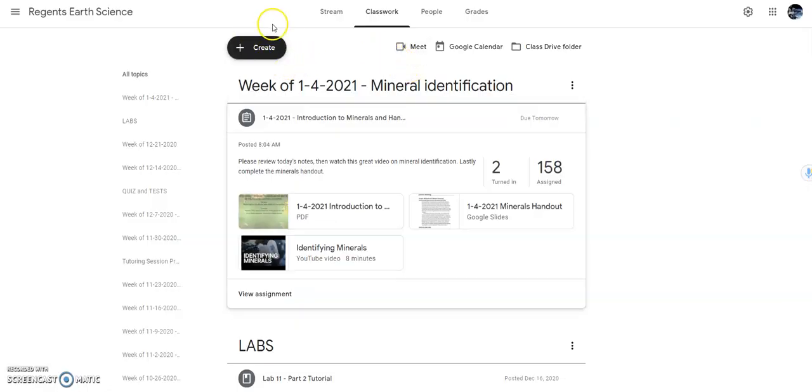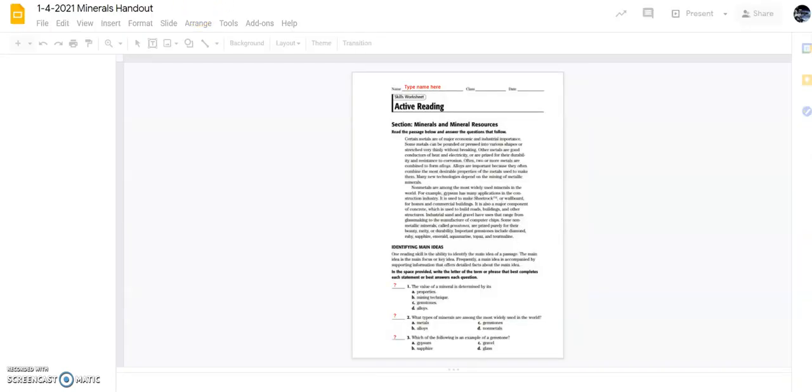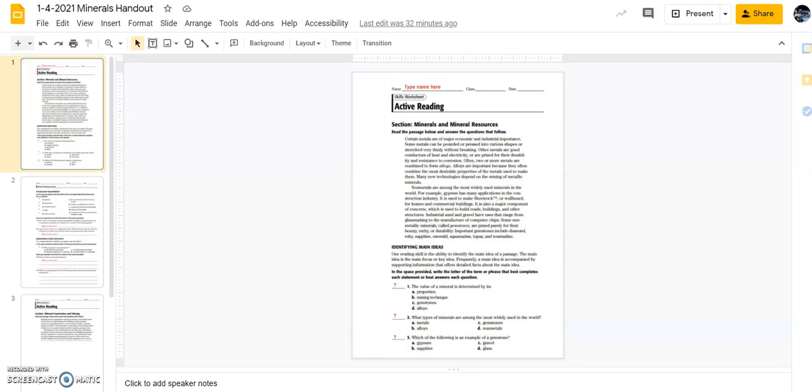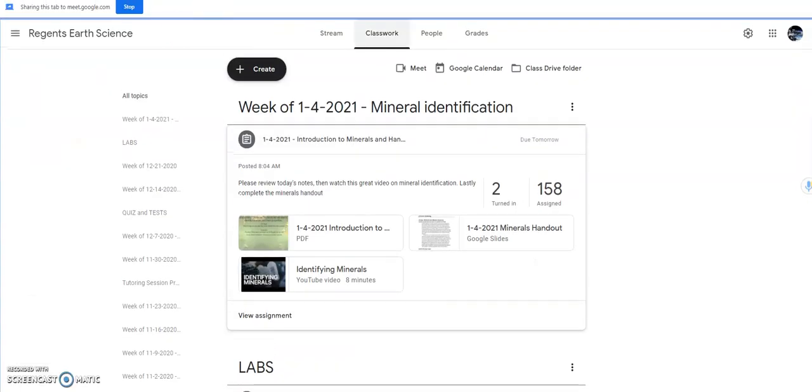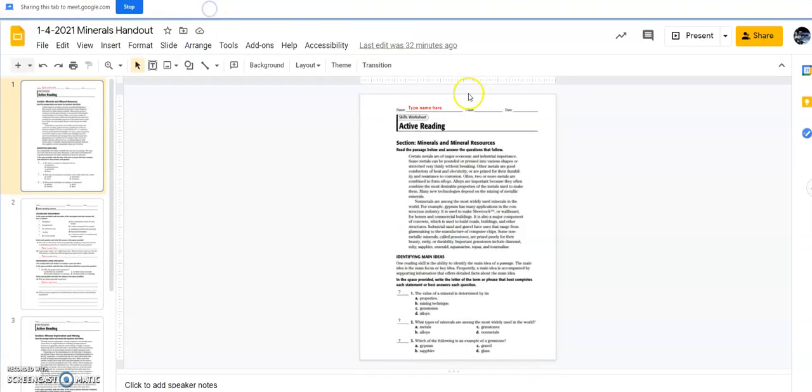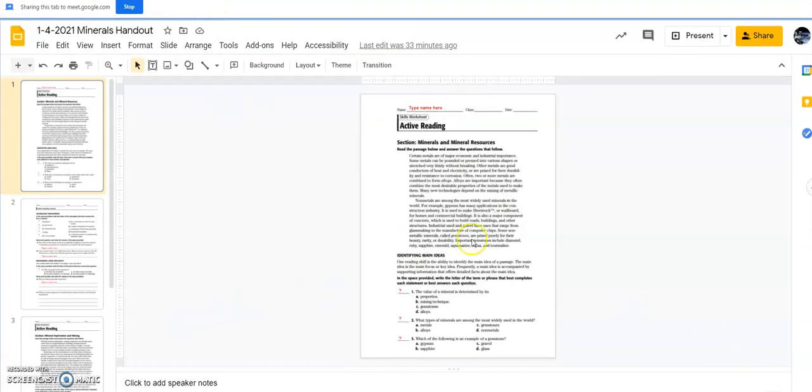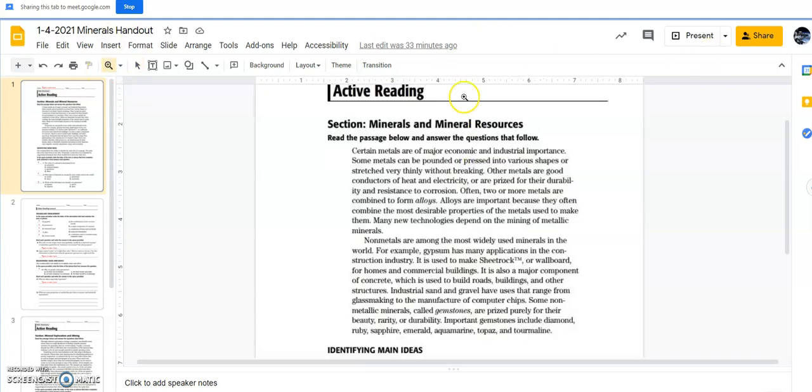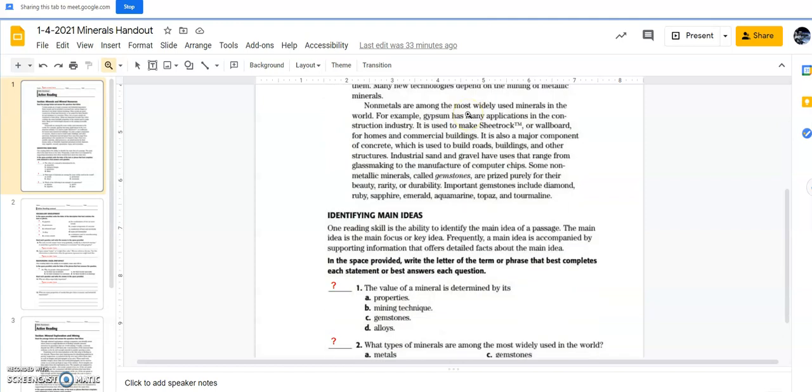You'll head to our Google classroom. You'll click on classwork. And you'll notice there's a new topic, week of 1-4-2021, mineral identification. You have a copy of today's PowerPoint. You have a short eight-minute video. And then you have a handout. Clicking through the handout. Let me show my screen while I'm at this. Clicking through the handout sends you to this page right here. Zoom in a bit. You have a small section on reading, reading about minerals.